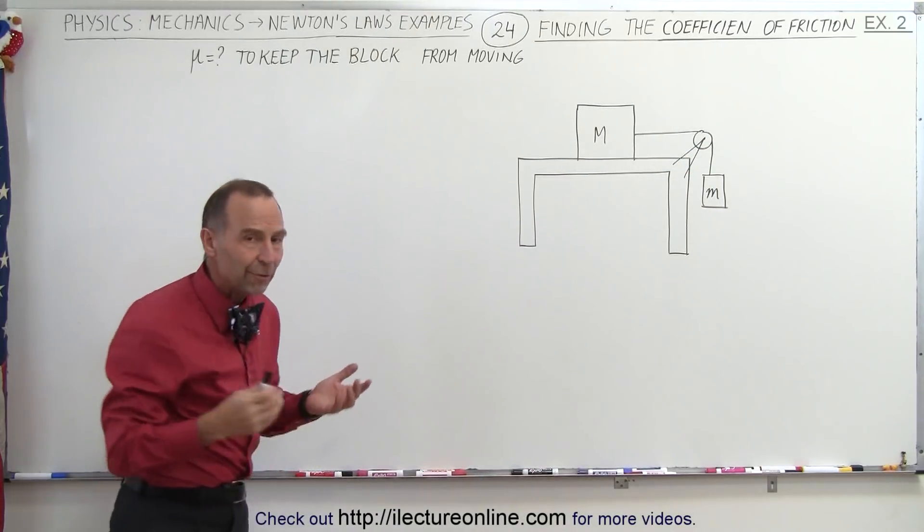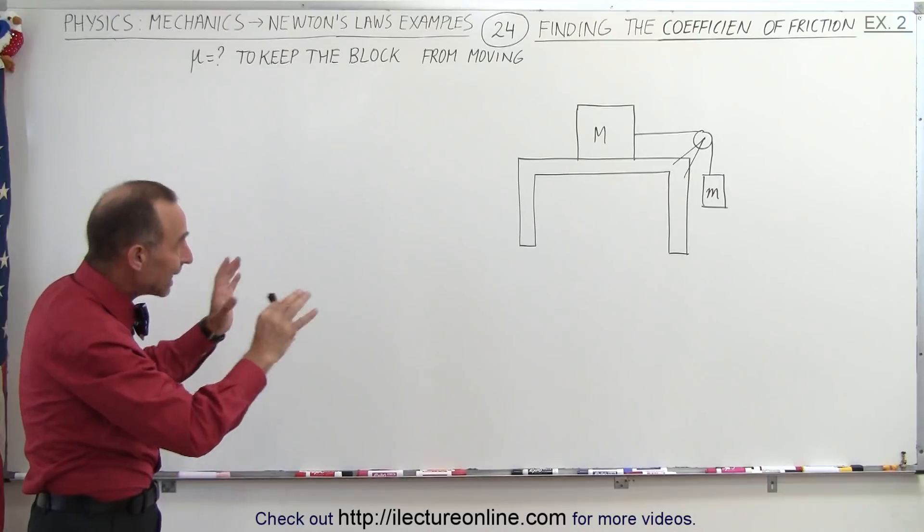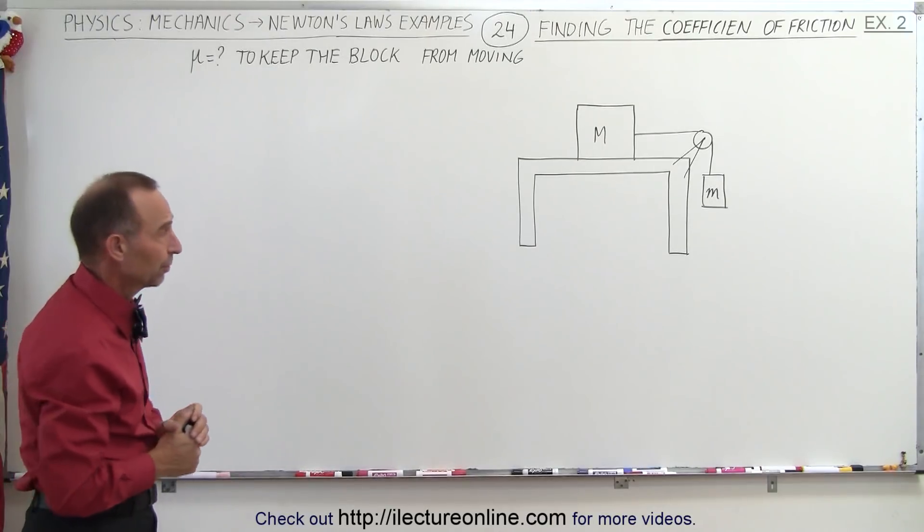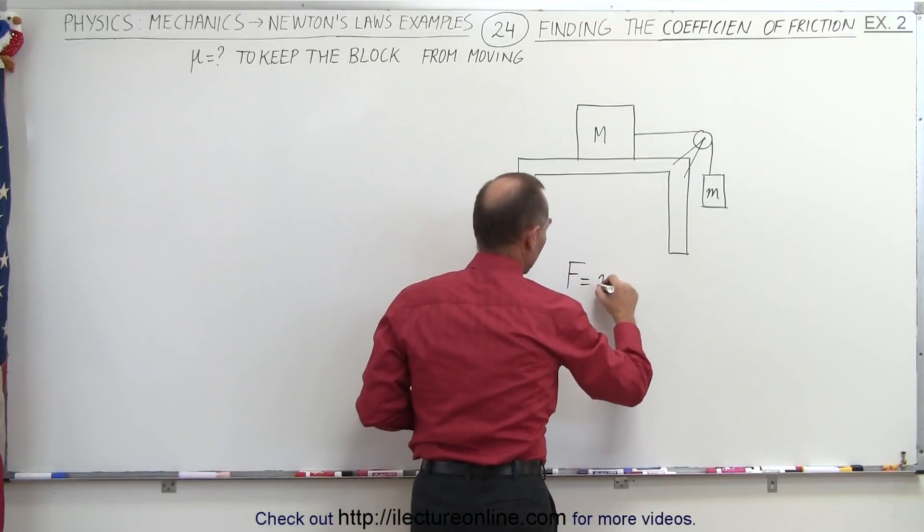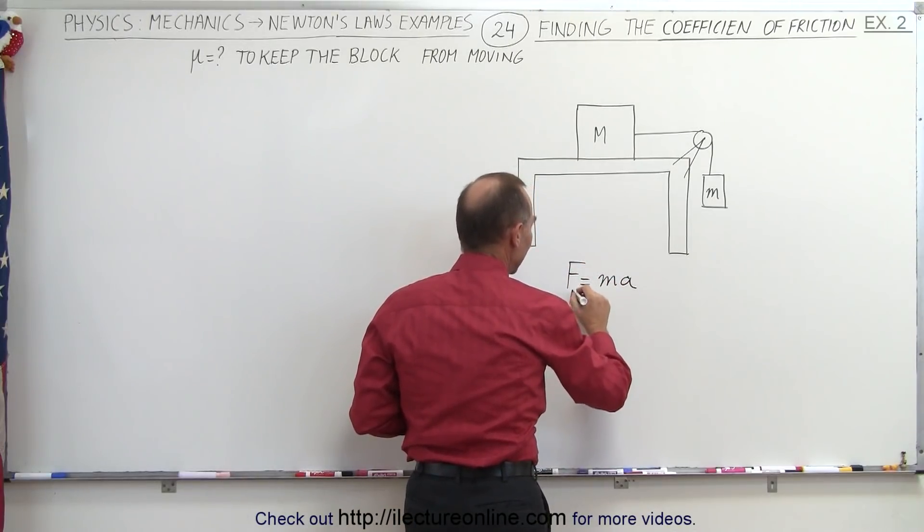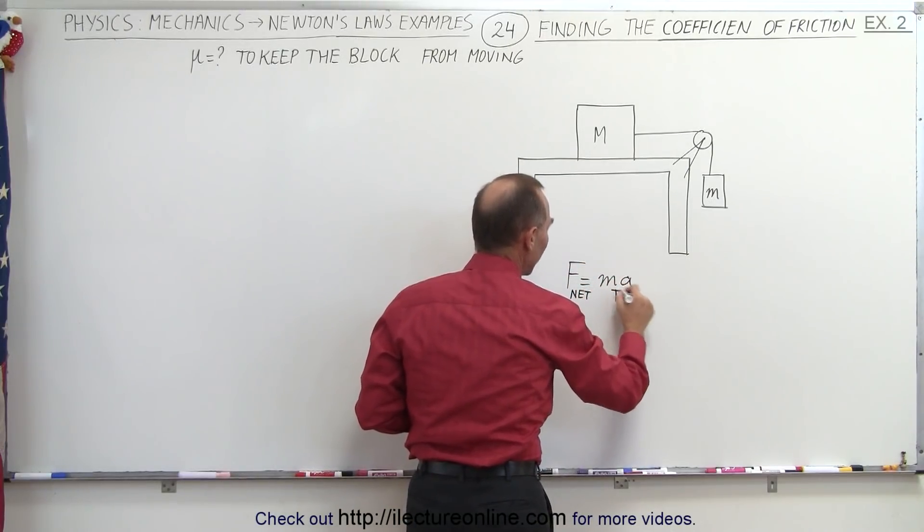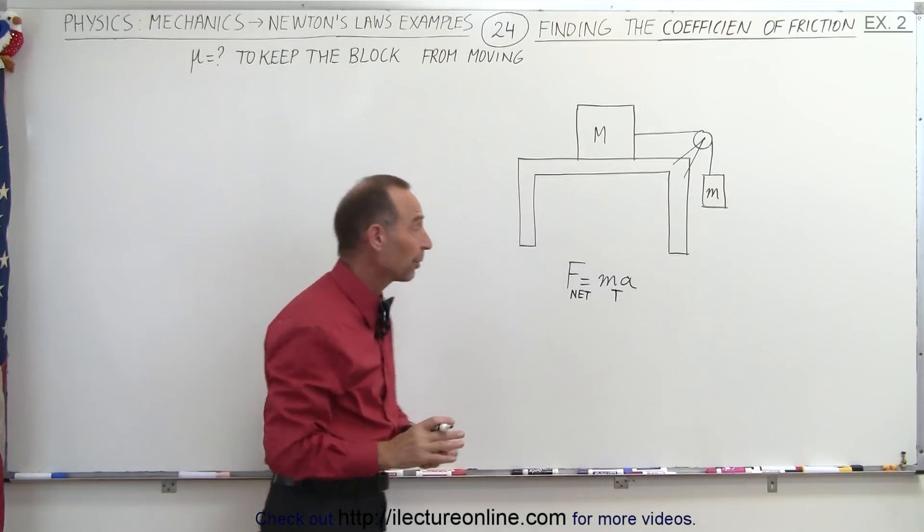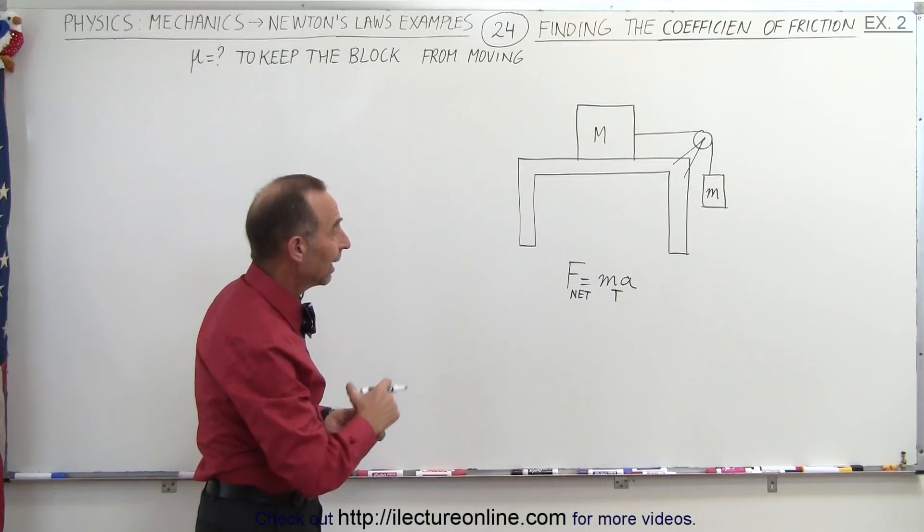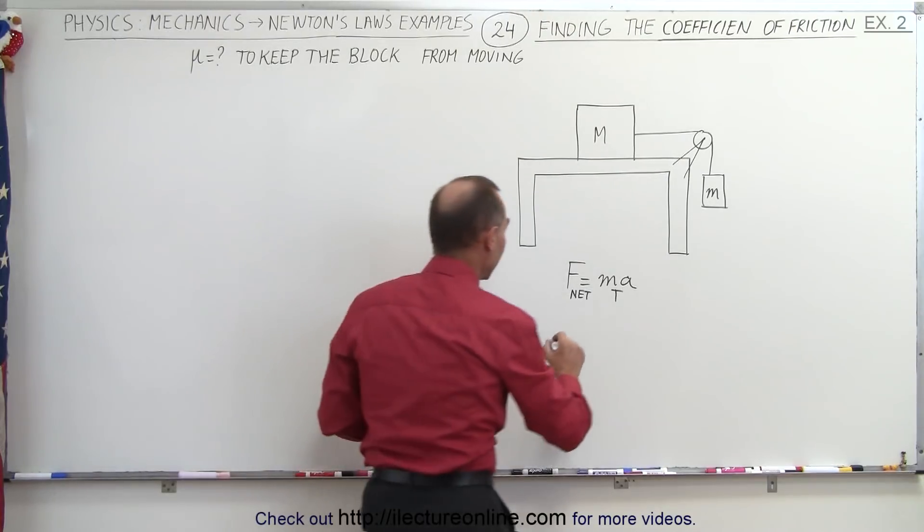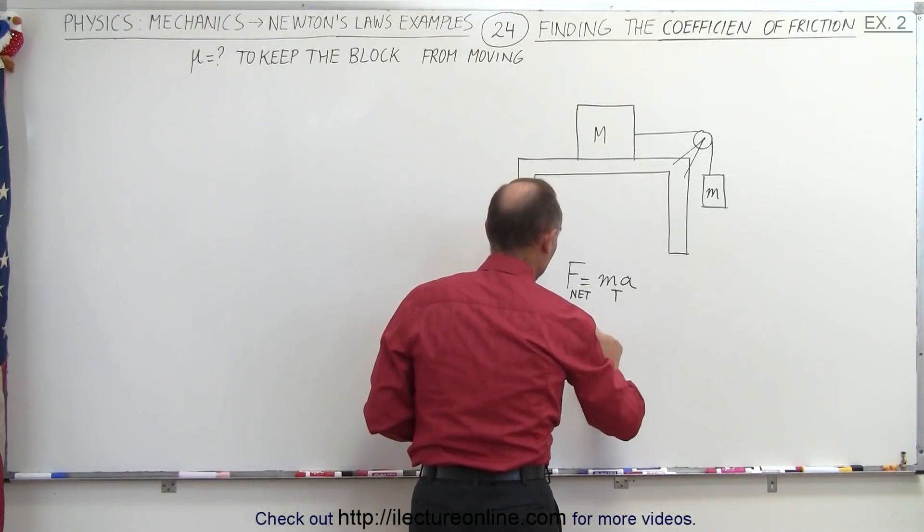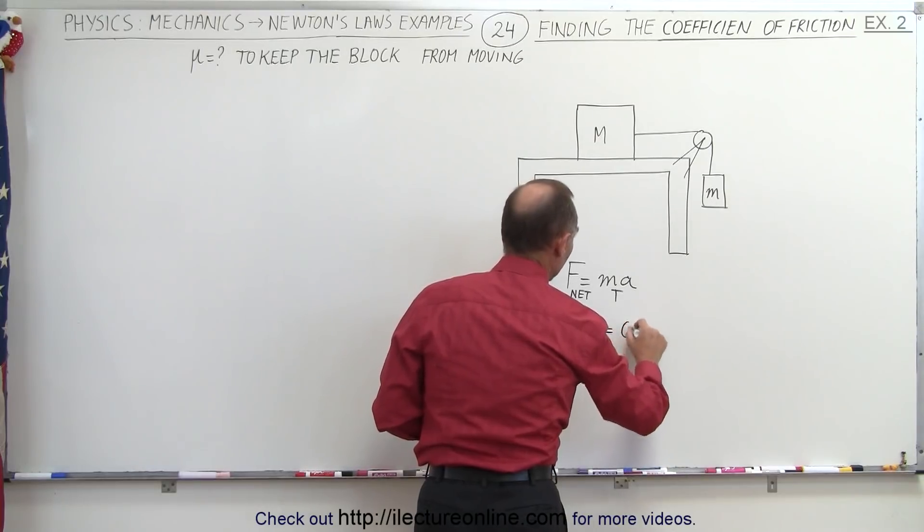So how do we find the coefficient of static friction required to keep the system from moving in the first place? Well, if we start using the equation F equals MA, of course we should write F net equals the total mass times acceleration. That's more appropriate in this case, and then we realize that for the system not to move, the acceleration must be zero. We can then say that F net must be equal to zero.